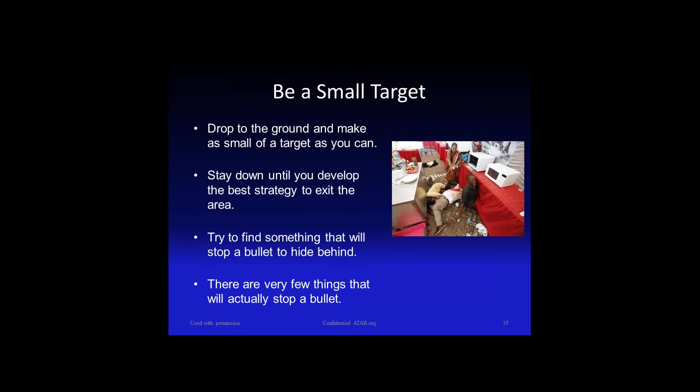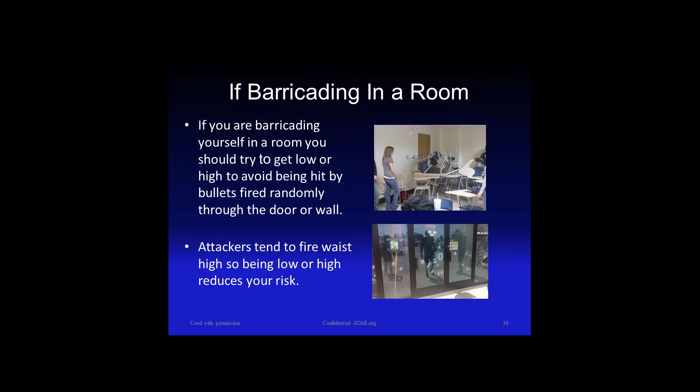If you do get caught somewhere, get on the floor, stay low, be as small as possible, and find something to hide behind. Many people think they can stand behind a drywall and it will protect them — a bullet goes right through drywall. When I was in college in Southern California, people had a fight in the parking lot and a bullet went right through the wall of my apartment and lodged in my dresser. There are very few things that stop a bullet — maybe a concrete block room. People need to know these things so they don't think they're getting away when they're not.